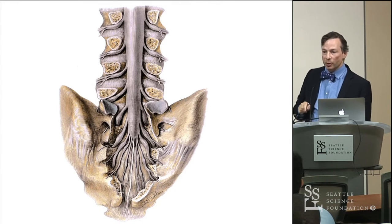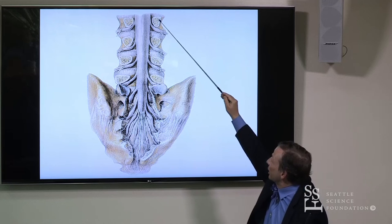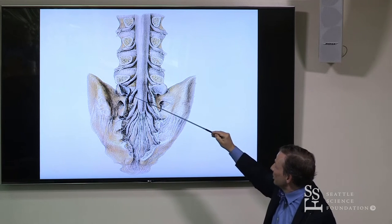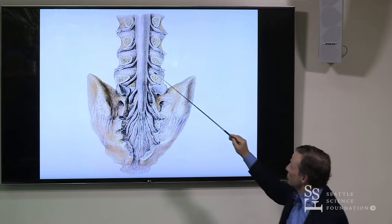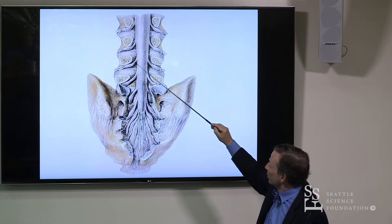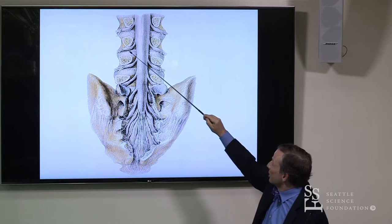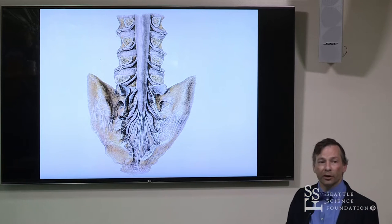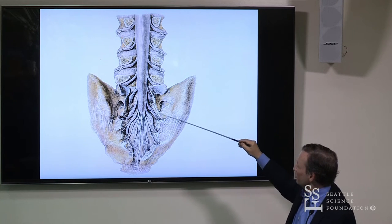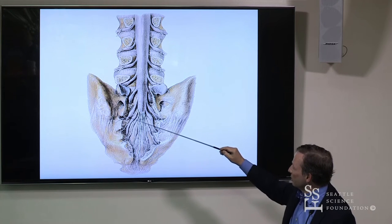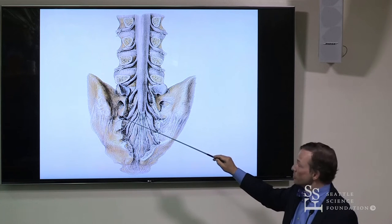Looking at a posterior exposure of the lumbosacral region with the posterior elements removed, we're looking at the pedicles — these are the cut ends of the pedicles. Here's the intervertebral disc. Here's the top of the sacrum with its superior articular facets, and then the thecal sac is shown very nicely. We see the dural nerve sheaths covering the spinal nerve and portions of the dorsal root ganglia. The ganglia in the lumbar sacral region are just inferior to those cut pedicles. The thecal sac ends here at about S2, and then we have little nerve sheaths that follow out those spinal branches. The dorsal rami are very small — they just go to those three structures.